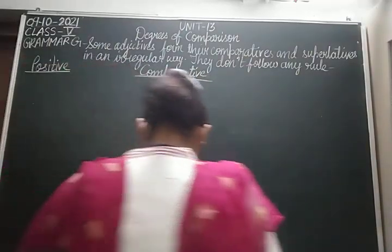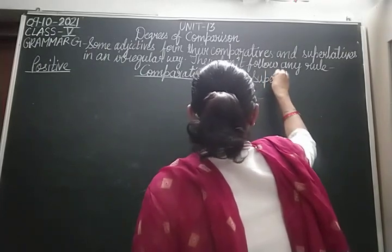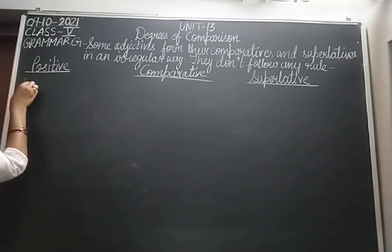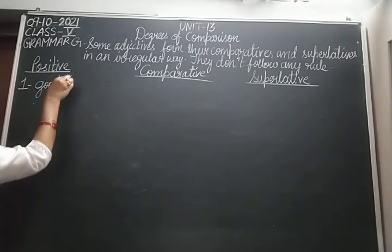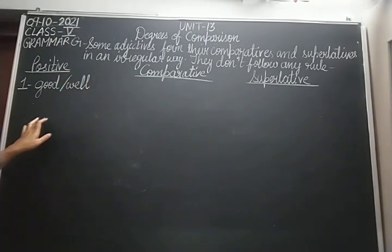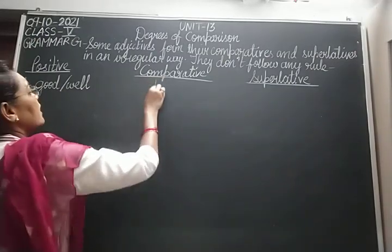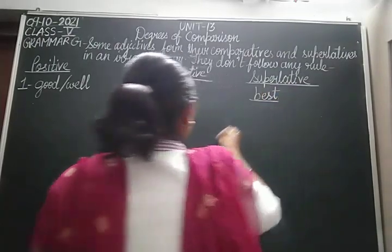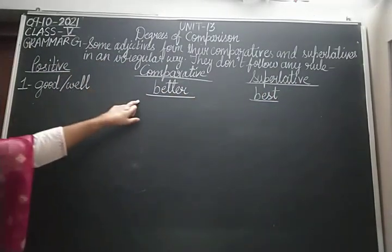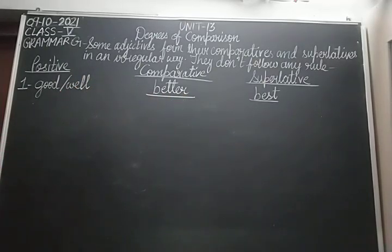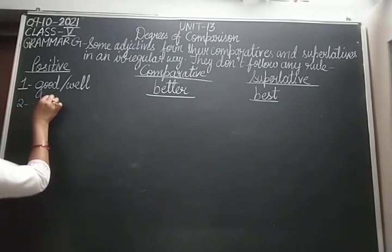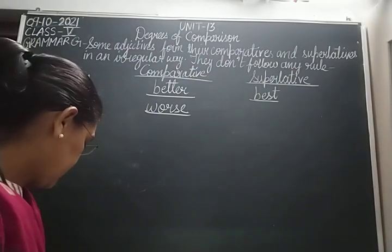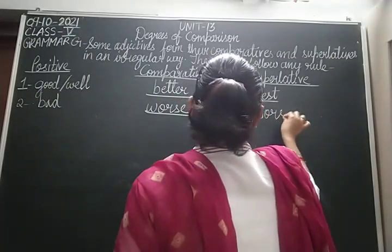GOOD and WELL: the comparative degree of good and well is BETTER, and the superlative degree is BEST. So: good–better–best; well–better–best. These are completely different forms. Then the second: BAD — the comparative degree of bad is WORSE and the superlative degree is WORST.